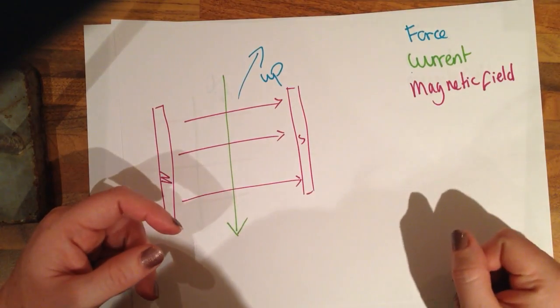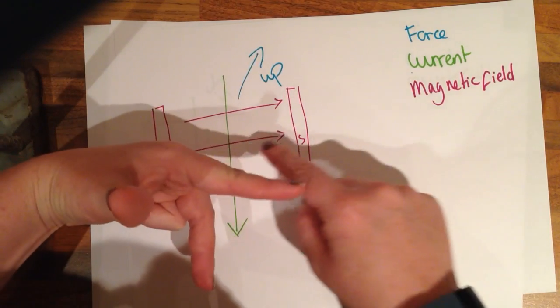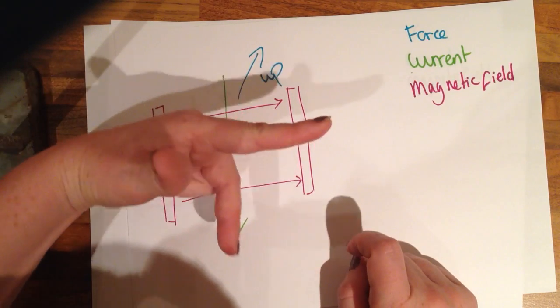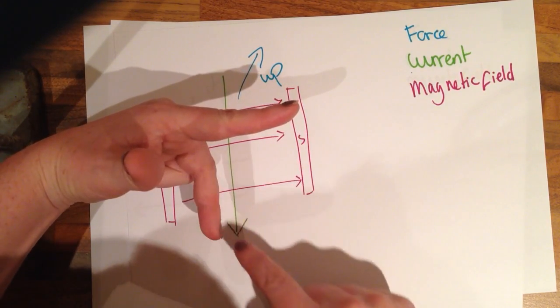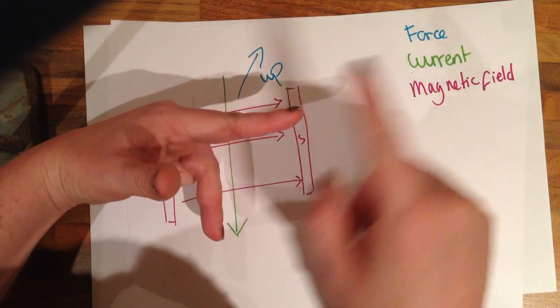So this is our first example here. I have my left hand, so magnetic field is in pink, current is in green and force is in blue. I point my first finger in the direction of the magnetic field, my second finger in the direction of the current and then the force is coming upwards in this video.